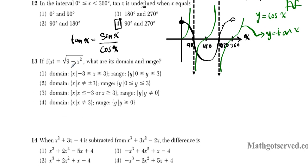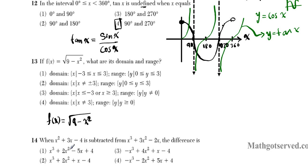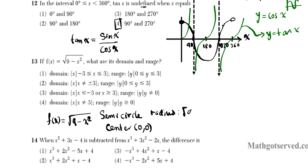Let's take a look at question 13. It says: if f(x) equals the square root of 9 minus x squared, what is the domain and range? There are two ways of doing this problem. The first involves identifying the geometrical representation. If you have a function of the form f(x) = √(a − x²), this is automatically a semicircle — centered at the origin with radius equal to √a.